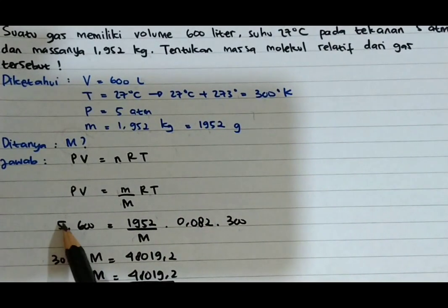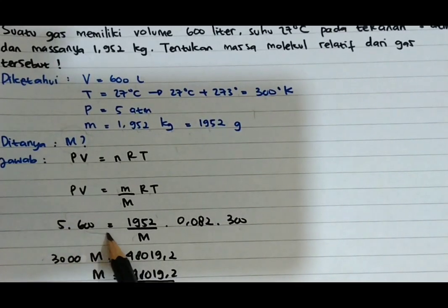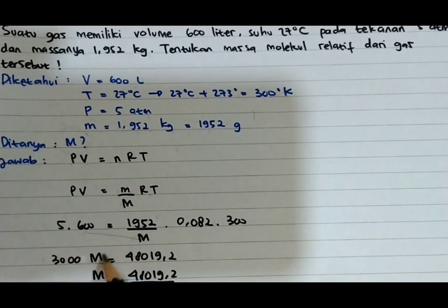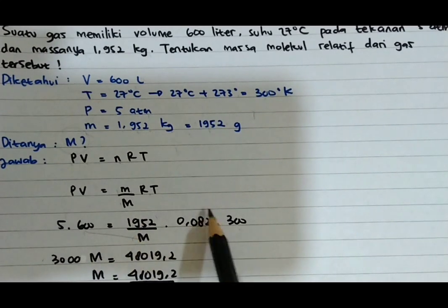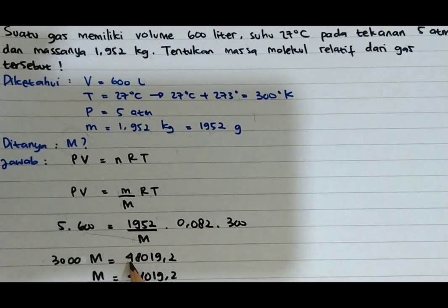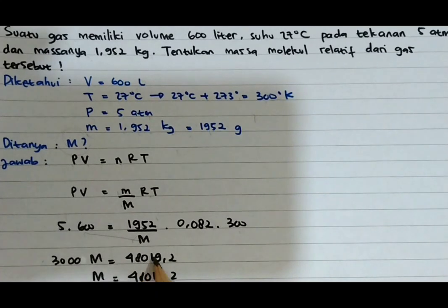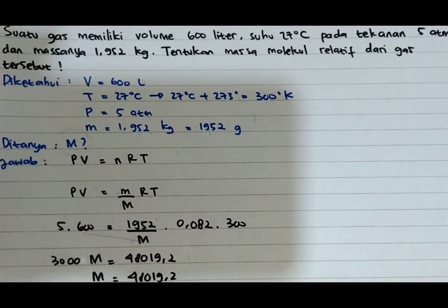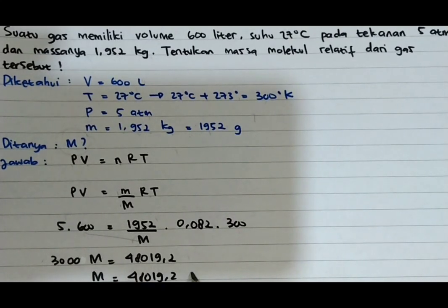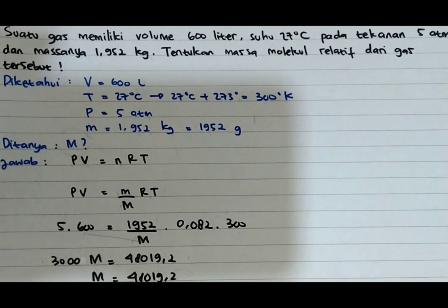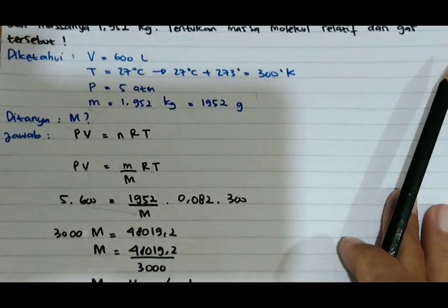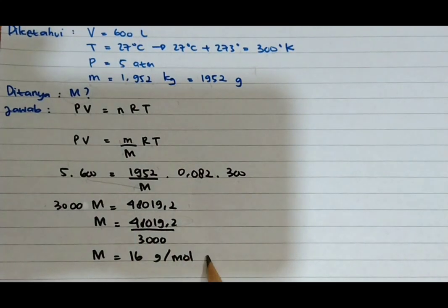Dari sini 5 × 600 sama dengan 3000. Kita kalikan silang dengan M maka 3000 × M_r, dan perkalian dari sisi kanan menghasilkan 48.019,2. Maka massa molekul relatifnya tinggal 48.019,2 dibagi 3000, ketemu sebesar 16 gram per mol.